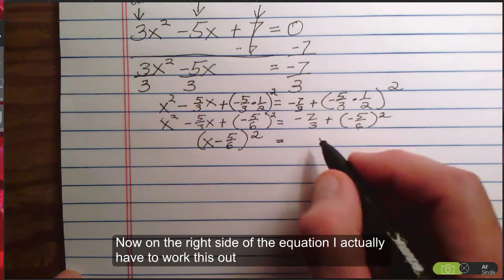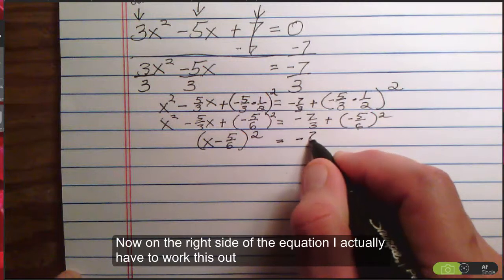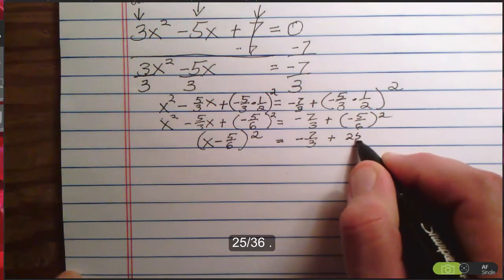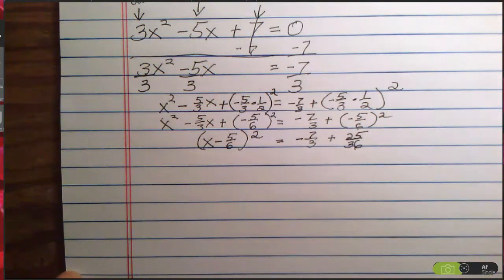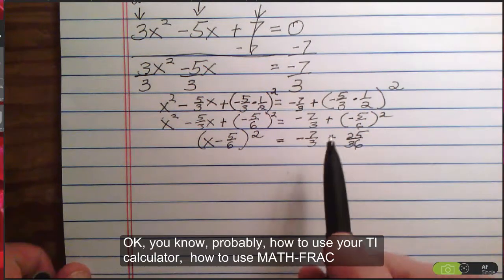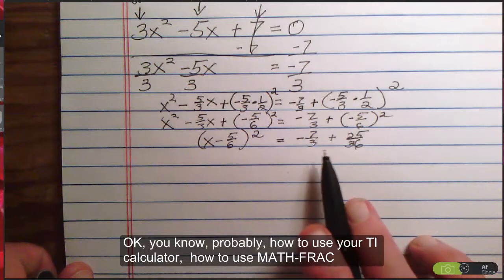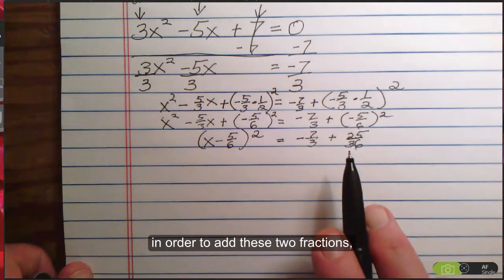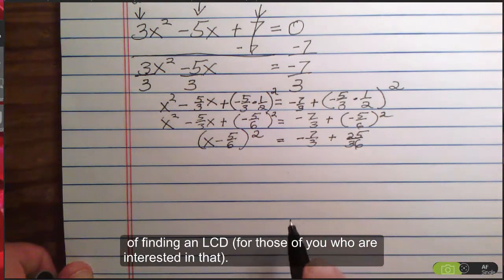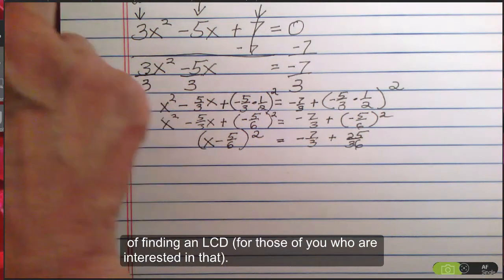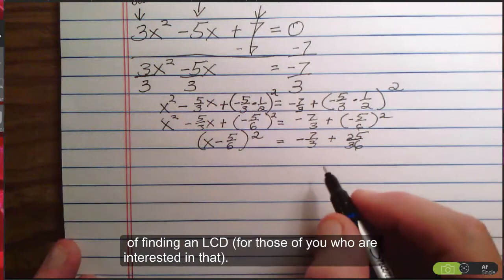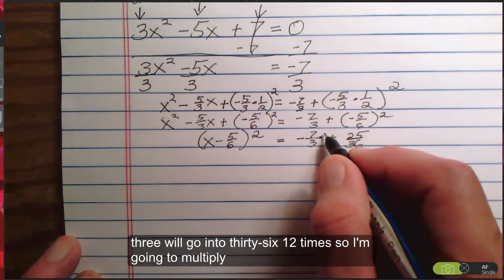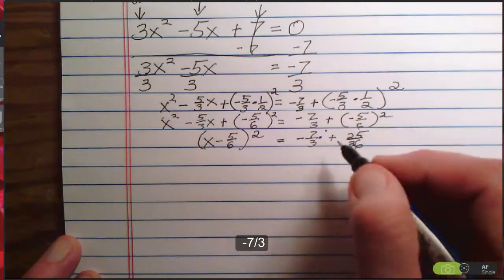Now, on the right side of the equation, I actually have to work this out. -7/3 plus 25/36. Okay, you know, probably, how to use your TI calculator, how to use MathFrac, in order to add these if you have trouble with fractions. But, I am going to use the old-fashioned method of finding an LCD for those of you who are interested in that. 3 will go into 36 12 times, so I'm going to multiply -7/3 by 12/12.